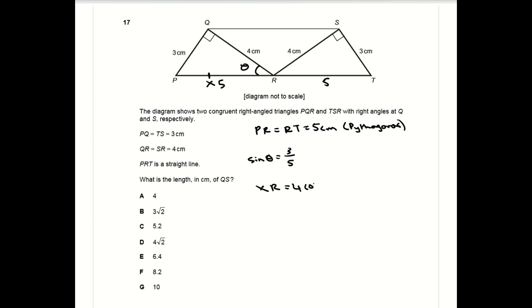You can use the relationship that XR, the distance XR, is equal to four cos theta. If sine theta is three over five, by sine squared theta plus cos squared theta equals one, you know that cos theta is four over five because the angle is acute. Four times four over five is 16 over five. The distance QS is two times the distance XR, so the distance QS is 32 over five, which is 6.4.